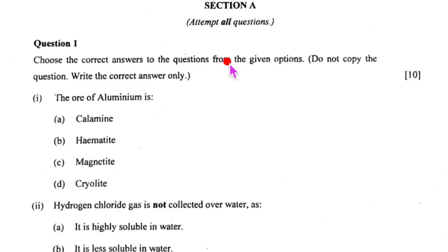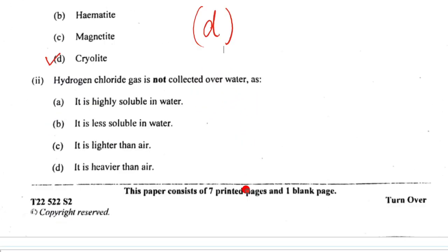Let's begin Section A. This is your MCQ section worth 10 marks. The first question asks about the ore of aluminium. This one is zinc, this one is iron, this one is iron again, and this one is cryolite which has aluminium. So the correct option here is D.